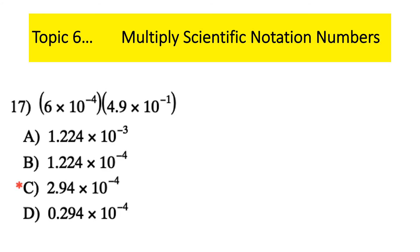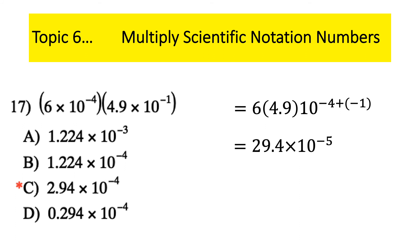Next topic: scientific notation — an example of multiplying with positive and negative exponents. We multiply 6 times 4.9, and 10⁻⁴ times 10⁻¹. 6 times 4.9 is 29.4, and −4 plus −1 is −5. But 29.4 is not between 1 and 10, so we move the decimal once — making it 2.94 — and increase the exponent by 1 to get 2.94 × 10⁻⁴.